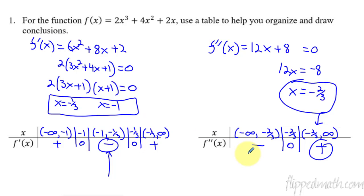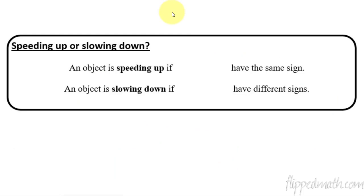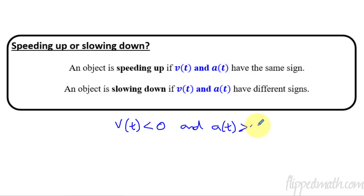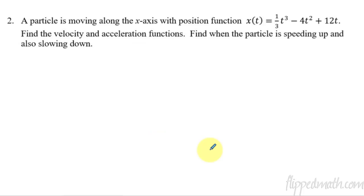Let's have a quick review on speeding up or slowing down. Remember when we did this with velocity and acceleration? An object is speeding up if velocity v(t) and acceleration a(t) have the same sign. An object is slowing down if those two things have different signs. Be very careful with your justification — velocity being negative does not mean it's slowing down. It's only slowing down if velocity is negative and acceleration is positive, meaning they have different signs.